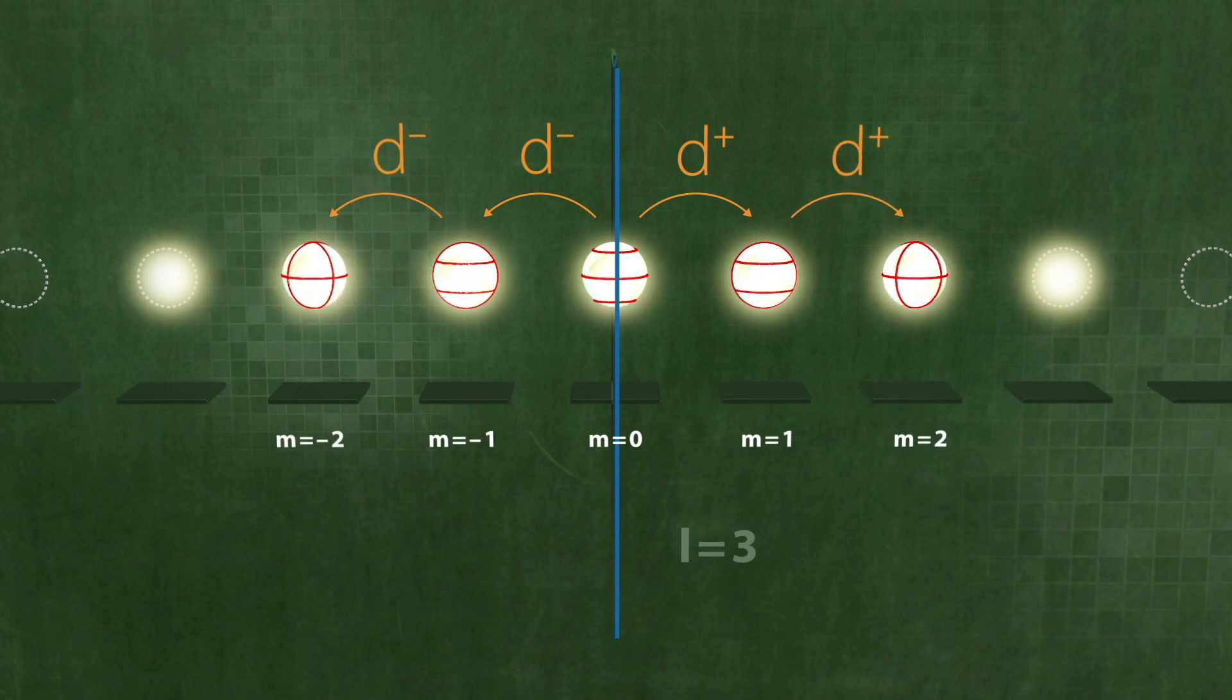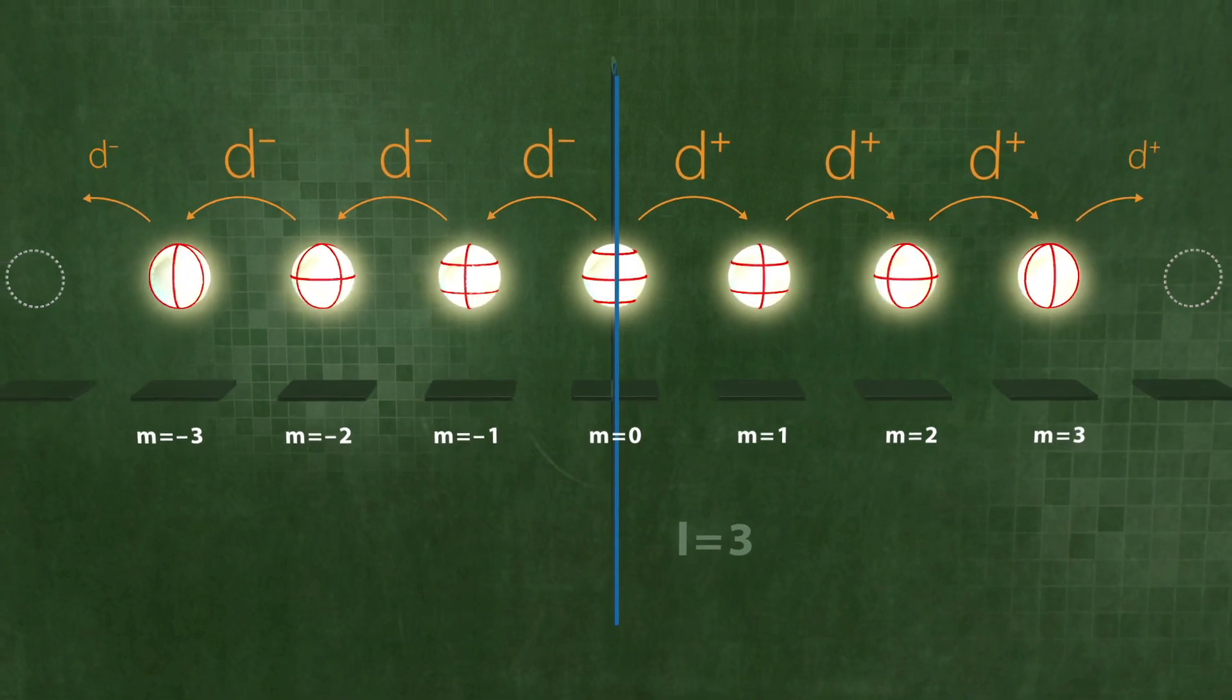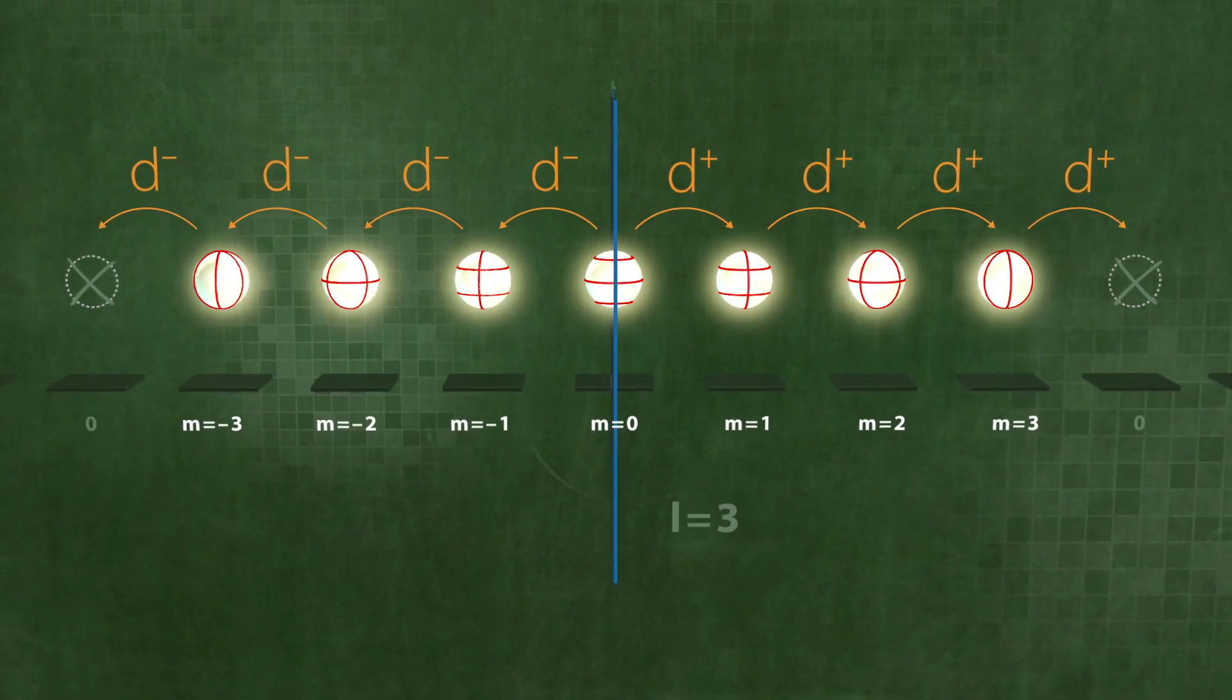If we apply the nodal rotation operator again, it will rotate another nodal line from horizontal to vertical. If the nodal rotation operator is applied once more, it will generate states in which all nodal lines are rotating about the z-axis, clockwise or anticlockwise. There are no more horizontal nodal lines.